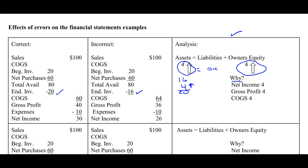I know that ending inventory directly affects cost of goods sold, so net income must need to be increased by 4 to make owner's equity bigger. And gross profit needs to be increased by 4 because net income needed to be increased by 4, and they travel together. Both of these were caused because the cost of goods sold would have been too small.